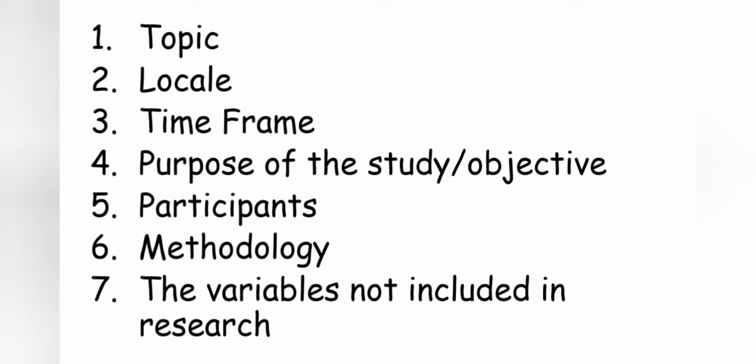These are the seven basic elements you must include: number one is topic; two, locale; three, the time frame; four, purpose of the study or the objective; five, the participants; six, the methodology — how did you get your data, how did you come up with the result, or how did you conduct the research study; and seven, the variables included in your research study.